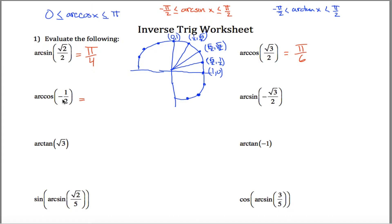Arc cosine of negative 1 half. So where's the x coordinate negative 1 half? That looks like right here — the x coordinate is negative 1 half. Also here, but to be in the proper quadrant, to make sure that arc cosine is between 0 and pi, I must be talking about this point. This point right here is 2 pi over 3.